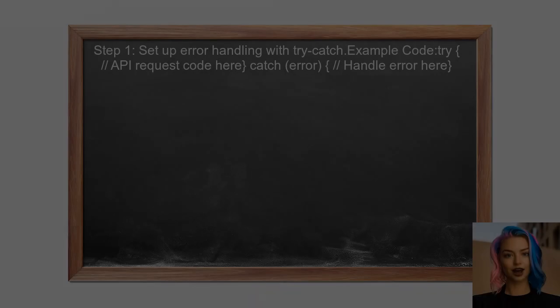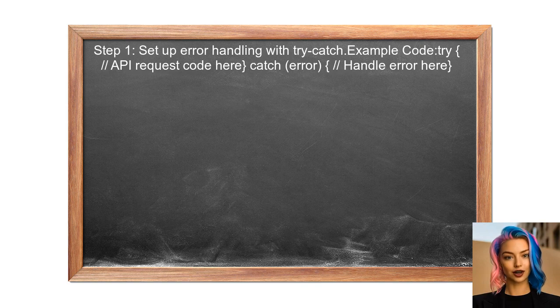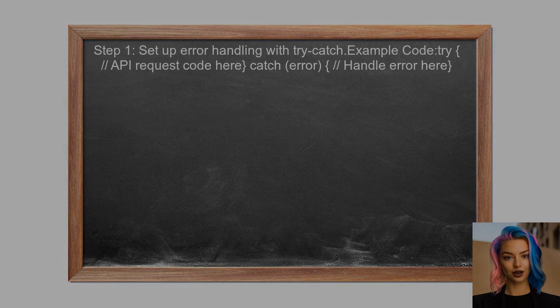To handle the 400 bad request error, first ensure you are correctly checking the response from the API. This involves using a try-catch block to catch any errors that occur during the API request.